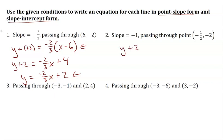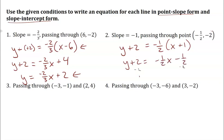With slope negative 1/2 and point (-1, -2): y plus 2 equals negative 1/2 times (x plus 1). For slope-intercept form, distribute the negative 1/2 to get negative 1/2 x minus 1/2, then subtract 2 from both sides. So y equals negative 1/2 x minus 5/2, or minus 2.5.